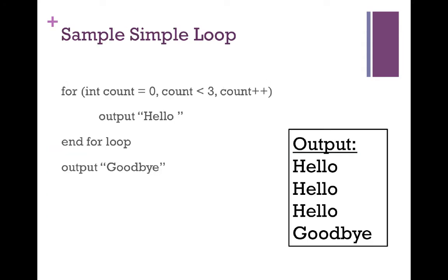Stepping through this example: count starts at zero. Zero is less than three, so we output hello. Count is increased by one, so count is now one. One is less than three, so we go through the for loop again and output hello. We increase count by one again, so count is now two. Two is less than three, so we output hello again.